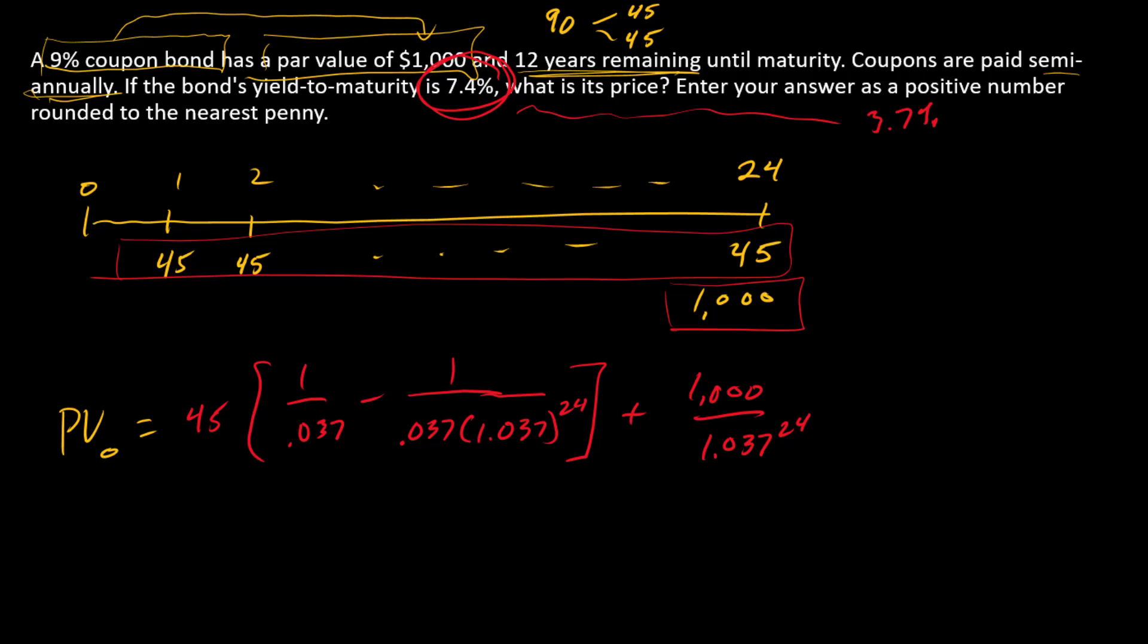Alternatively, we can go to a financial calculator. If we go to a financial calculator, we're going to use $45 as payment, it's an annuity, and $1,000 as FV, because FV should be whatever cash flow happens at the end of the timeline, incremental to whatever is covered by the payment. 24 is N, and 3.7 is I.